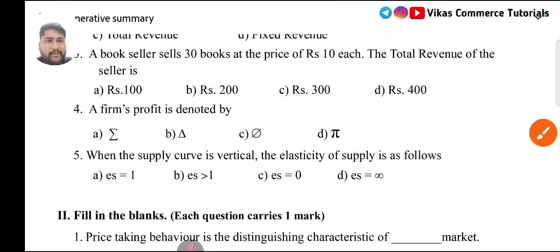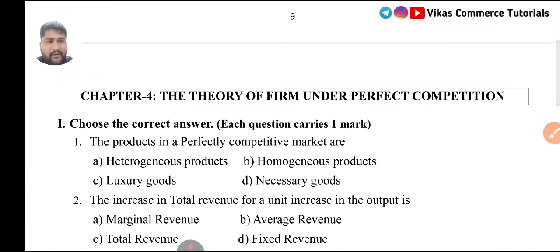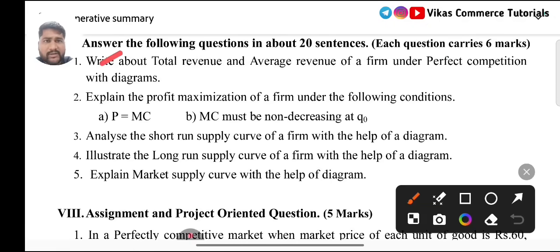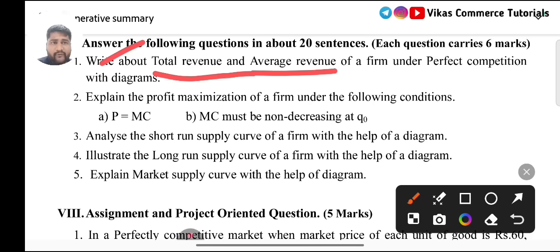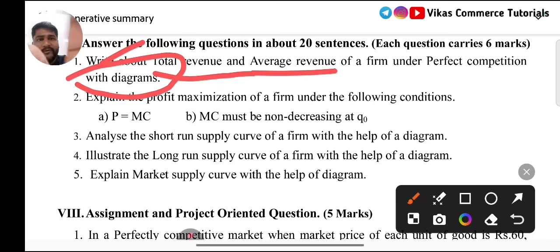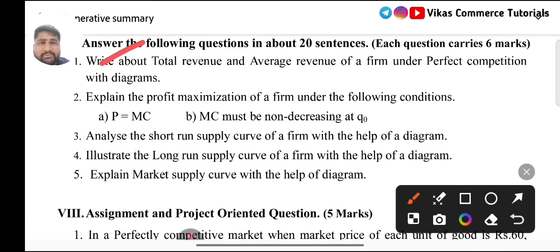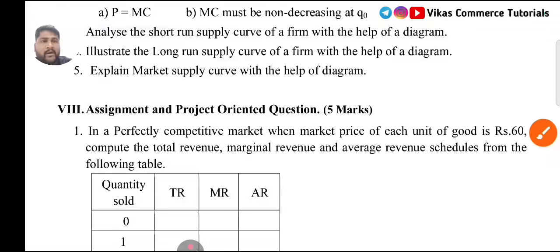Coming to Chapter 4: Theory of the Firm under Perfect Competition. I guess only one important question here, that is Question 1: Total Revenue and Average Revenue. You need to explain total revenue as well as average revenue with diagrams. That is Question 1. There are no other important 6 marks questions from this chapter, as other questions have never been asked in model question papers or annual exam papers.